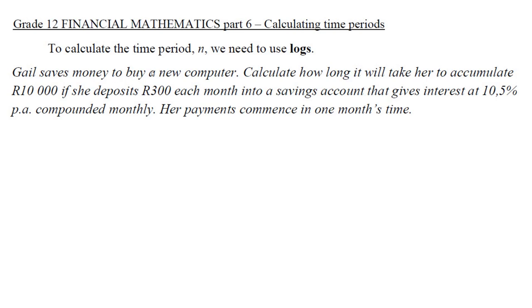Gail saves money to buy a computer. She needs 10,000 rand, but she deposits 300 rand each month. So that's f, what she needs in the future. This is x, the payments, and the interest is 0.105 over 12.